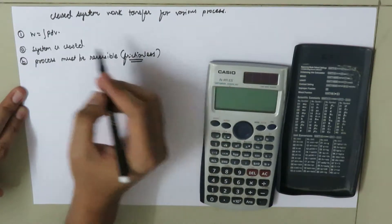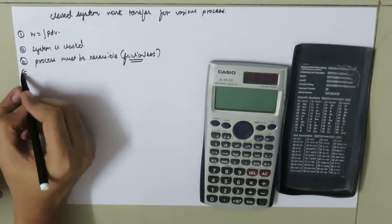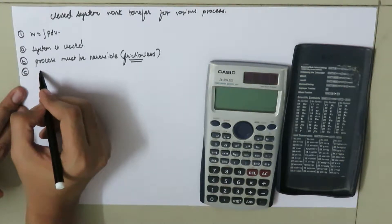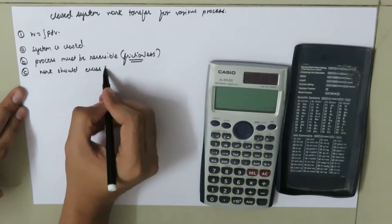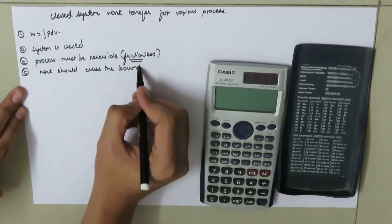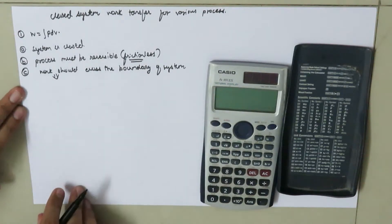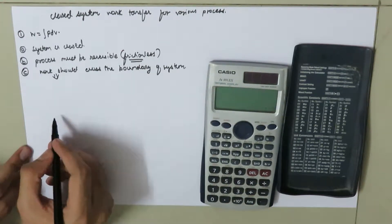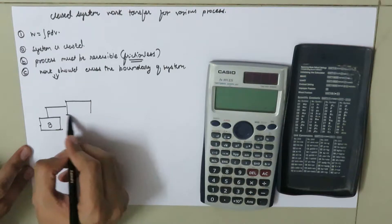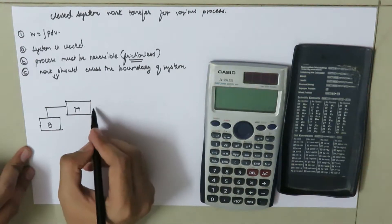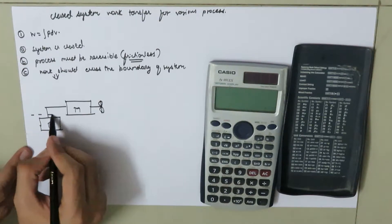So we can use W equals integration of P dV when the process is frictionless. The third condition is that the work should cross the boundary of the system. To illustrate this, consider an example of a motor driven by a battery — suppose this is battery B, this is the motor, here we have the shaft of the motor, and this is the fan.